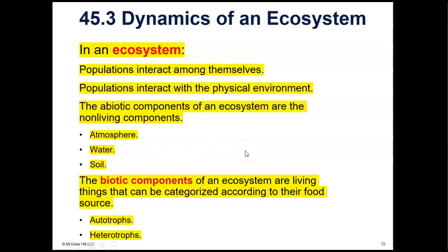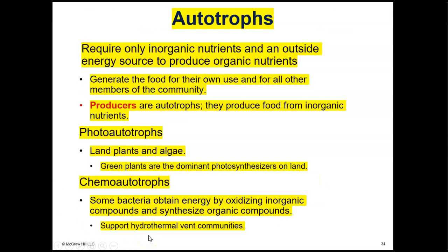Now let's cover section three and understand the dynamics of an ecosystem — all the factors that play a part in keeping an ecosystem healthy. In an ecosystem, populations interact among themselves and with the physical environment. The abiotic components are the non-living components: the atmosphere, the air, the water, and the soil. The biotic components are the living things, and they can be categorized as autotrophs or heterotrophs based on whether they make their own food — like plants through photosynthesis — or whether they consume food. Autotrophs require only inorganic nutrients and an outside energy source to produce organic nutrients.